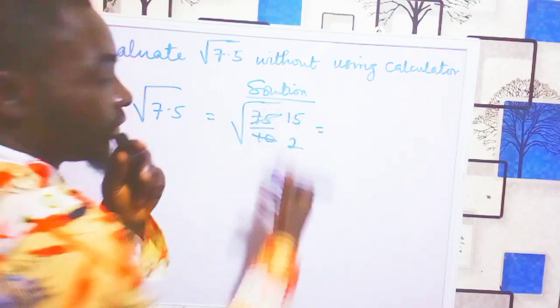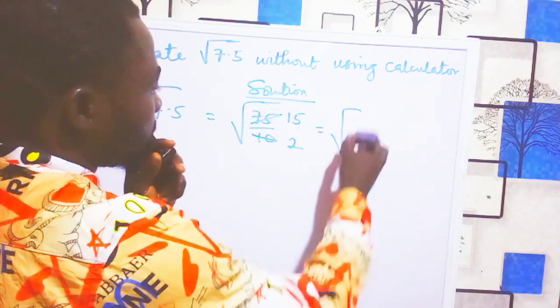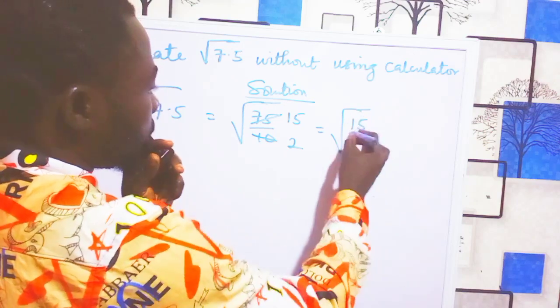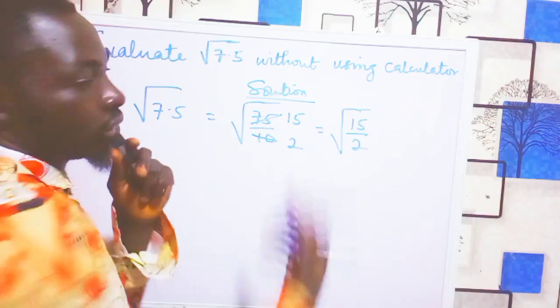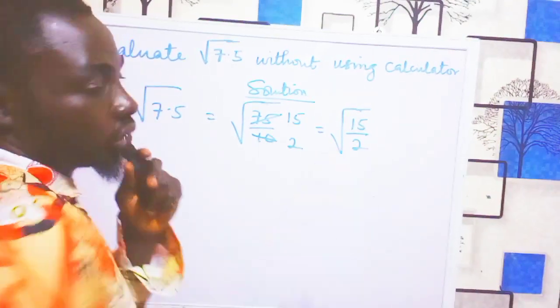So because we can divide by 5, we have 15 over 2. Now, because you cannot find the square root of 15 or square root of 2 directly, we can split them up.